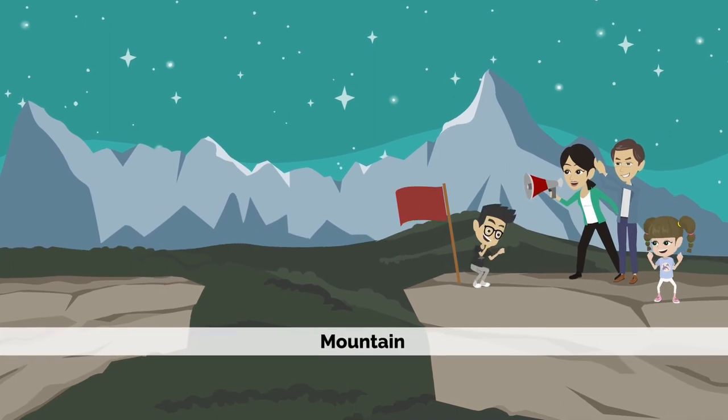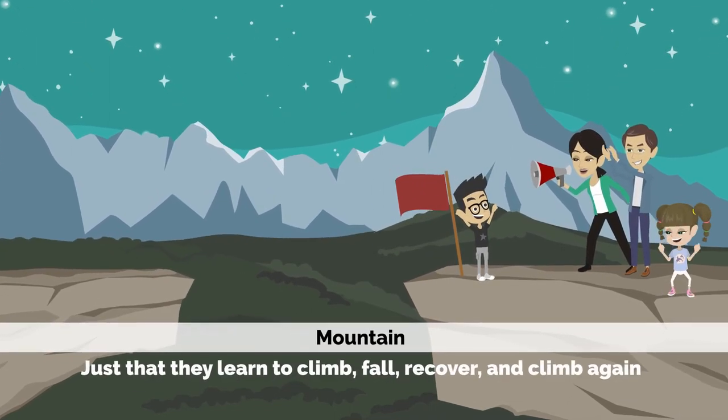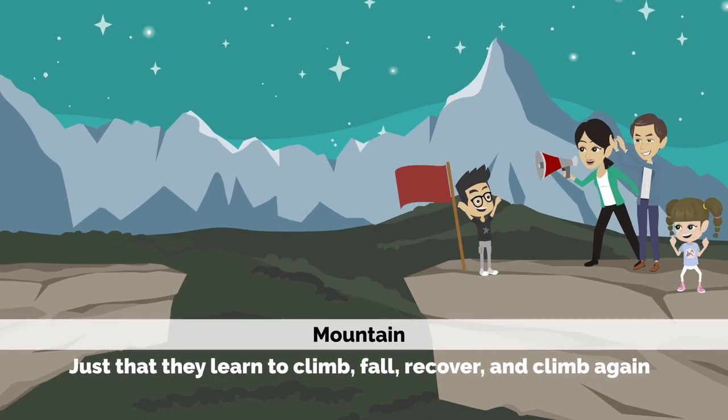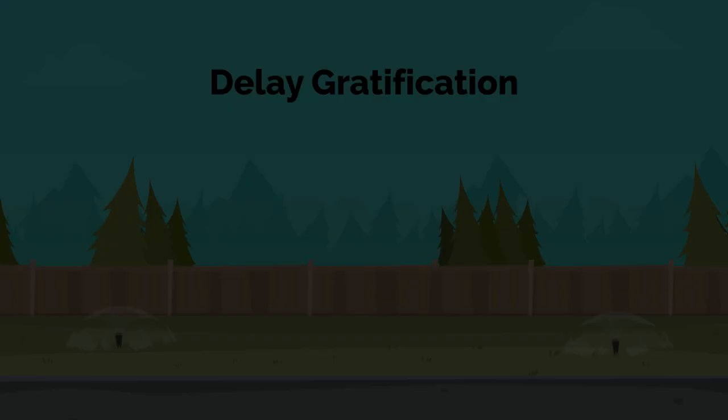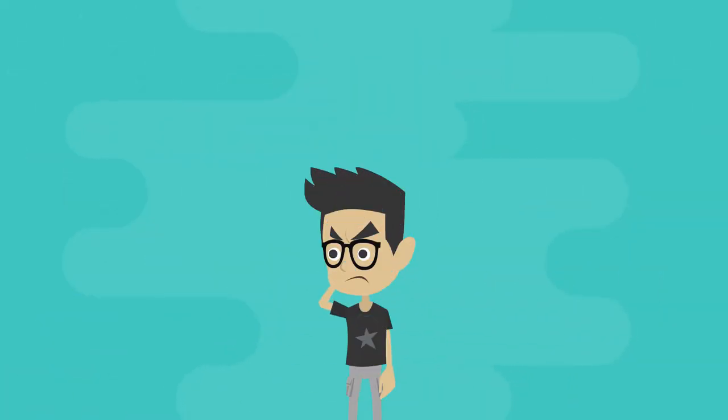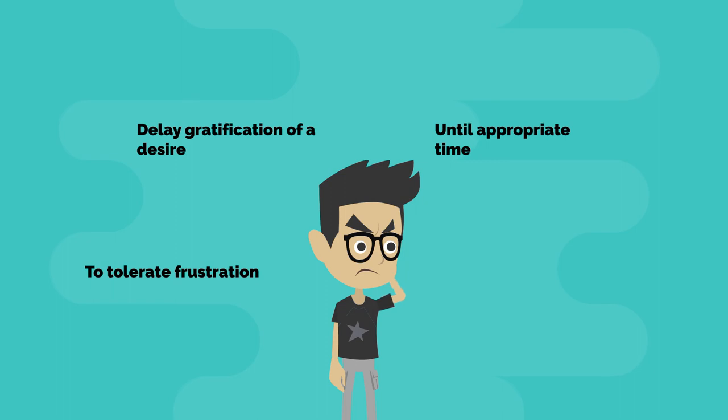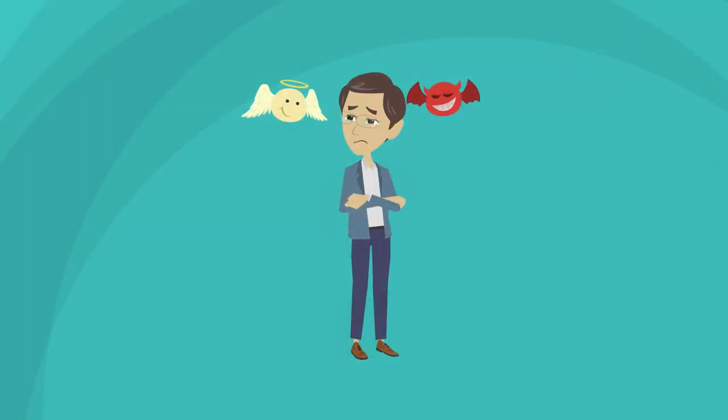Parents shouldn't care what mountain their child is ascending, just that they learn to climb, fall, recover, and climb again. Delay gratification. The process of teaching a child to tolerate frustration and delay gratification of a desire, either until the appropriate time or until the child has earned the desired object, takes constant effort.